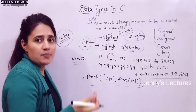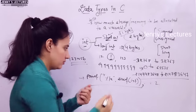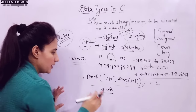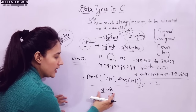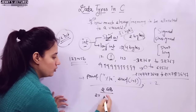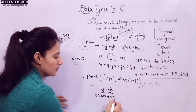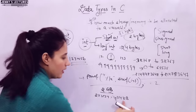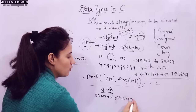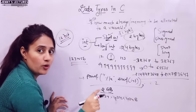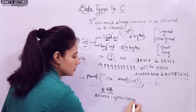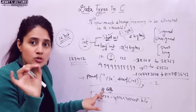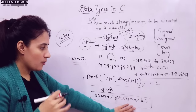Suppose your RAM is 2 GB. How many bits can that RAM store? It's 2 × 1024 MB × 1024 KB × 1024 bytes × 8 bits — these many bits your RAM can store if RAM is only 2 GB. So you can see how many bits we can store.